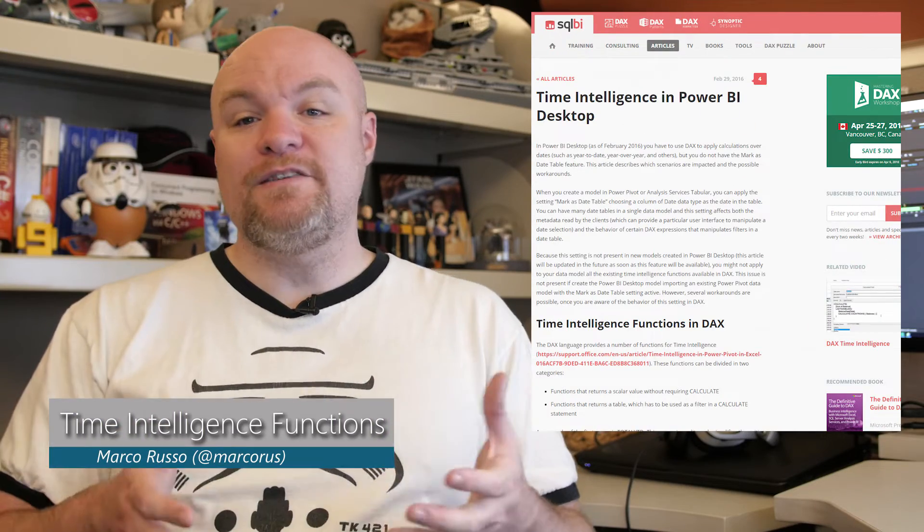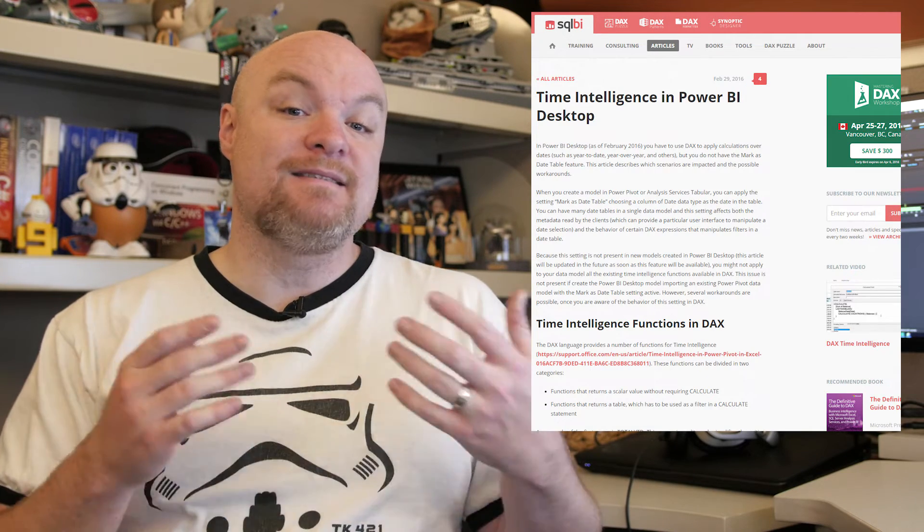Last on my list for today is a blog post from Marco Russo, where he takes a look at time intelligence functions in DAX and some of the problems you could hit in Power BI Desktop, mainly because the 'mark as date table' feature is not available in Power BI Desktop — you have that ability in Analysis Services as well as Power Pivot in Excel. He takes a look at how you can overcome that issue and still make use of time intelligence functions, so if you're hitting that wall, be sure to check out this blog post.